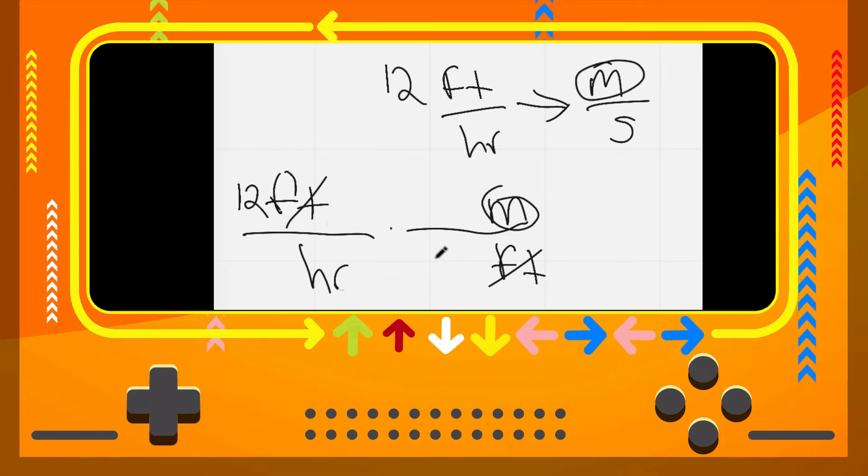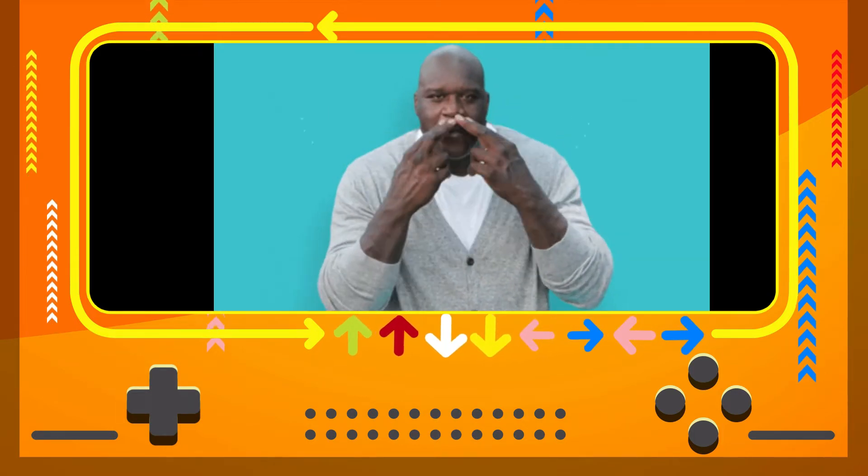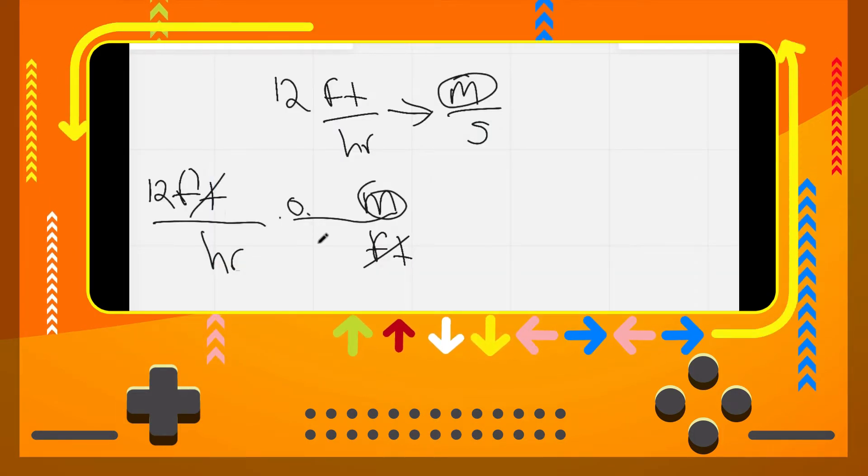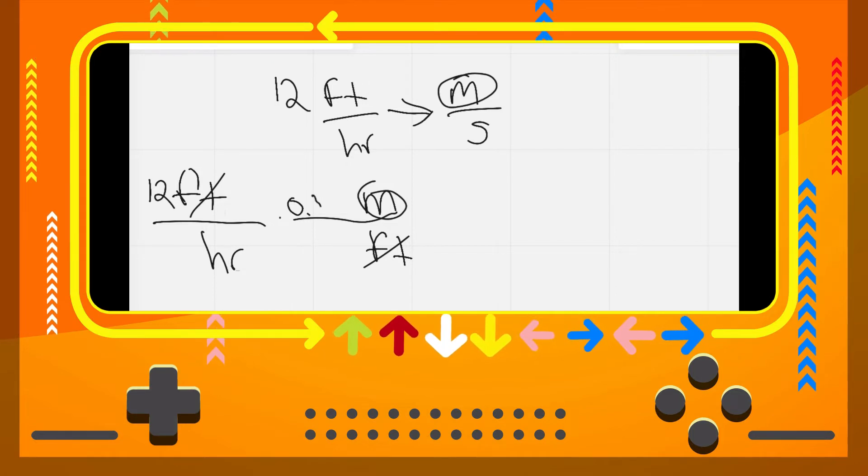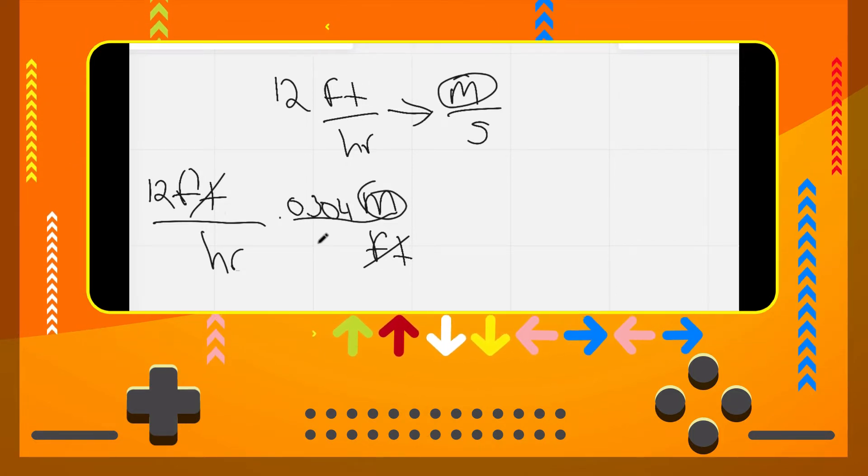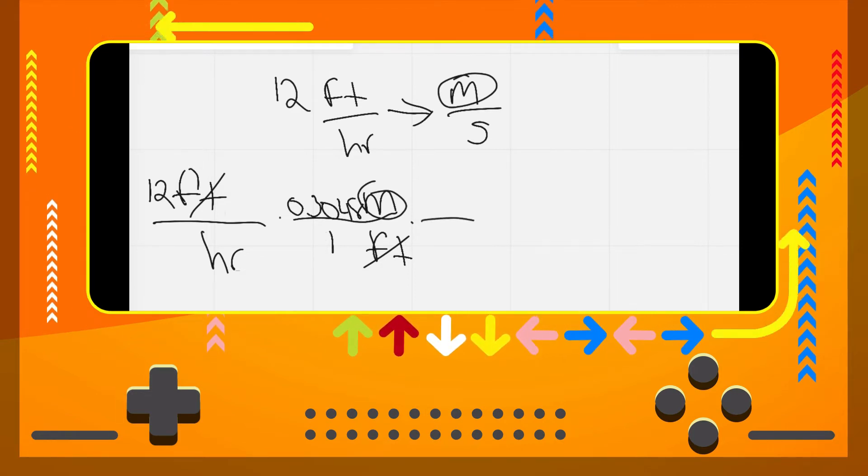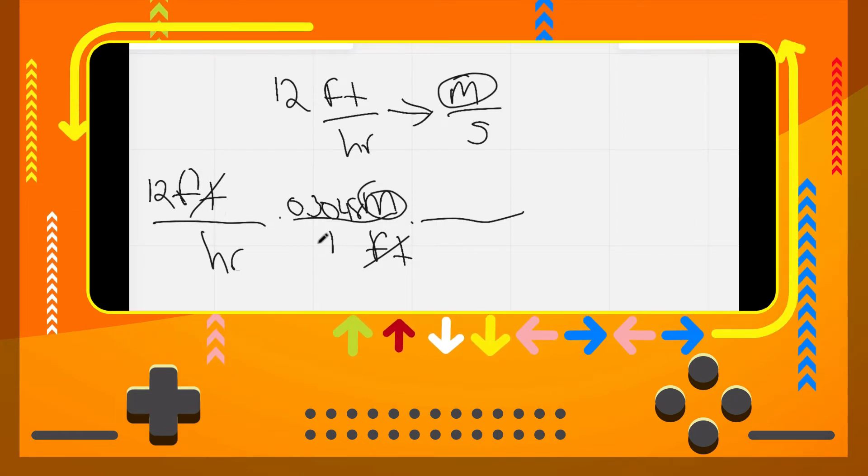The conversion factor I'm going to use is that there's 0.3048 meters for every one foot. Now that I got that situated, what can we do from here? My meters is good, we see that. The only thing I need to worry about now is converting my hours to seconds. Notice how this is set up - my feet go to meters, that's going to be on top. My hours to seconds, that's going to be on bottom.